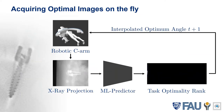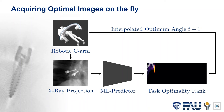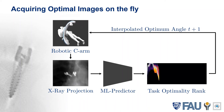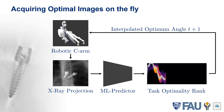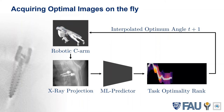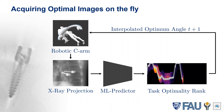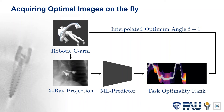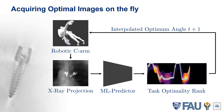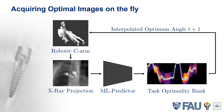To acquire optimum images, we propose the following pipeline. Starting on the upper left side, a robotic C-arm acquires X-ray projections. Those X-ray projections are fed into a machine learning-based predictor. The predictor model predicts a task optimality rank for possible future out-of-plane angles. The best out-of-plane angle is selected from the predicted task optimality rank, provided back to the scanner, the next X-ray projection is acquired, and therefore the loop is closed.